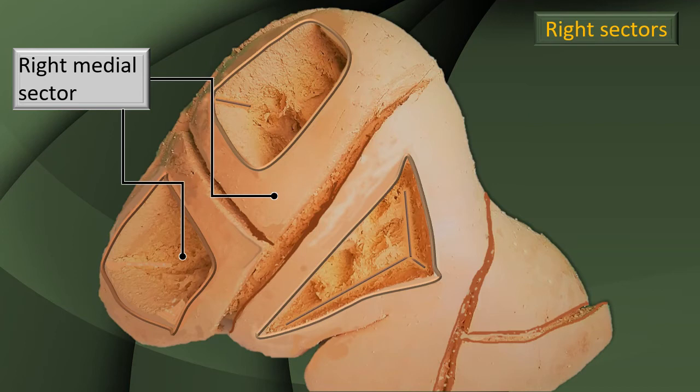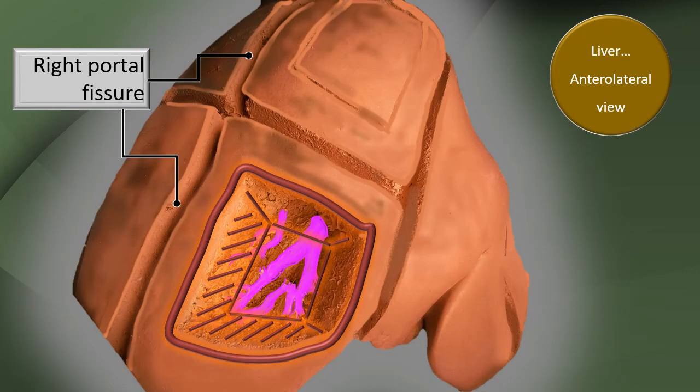Similarly, on the right side, the right sectors can be further divided. Note that this view is not the front view — this is the anterolateral view of the liver. There is another fissure called the right portal fissure, to the right of the main portal fissure. These fissures are all artificially created as part of the dissection to demonstrate the specimen.